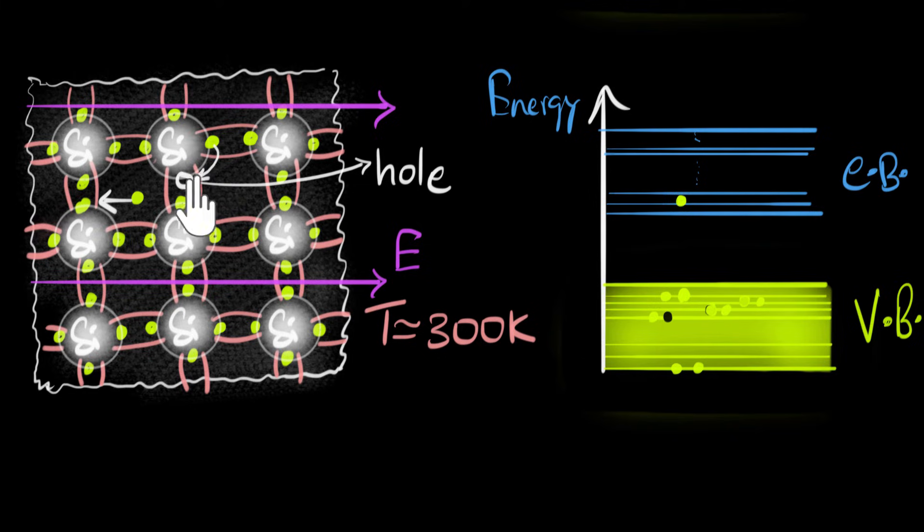A couple of notes to end the video. First one is that even though holes are treated as positively charged particles, don't think that they are going to attract the electrons. They don't attract the electrons at all. You can think of them as independently moving. But of course, if an electron comes very close to a hole, yes, it can fall into that hole, but don't think they're attracting each other.